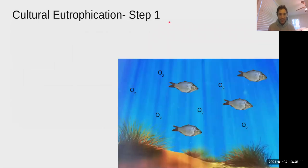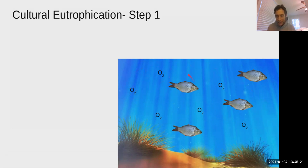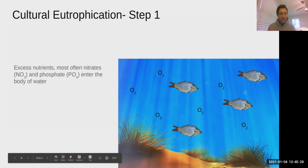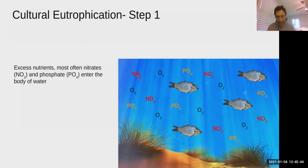Step one: we begin with a nice body of water with dissolved oxygen and healthy fish. Then excess nutrients — specifically nitrates (NO₃) and phosphates (PO₄) — enter the body of water.